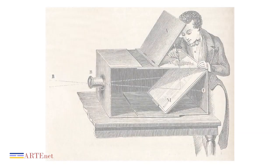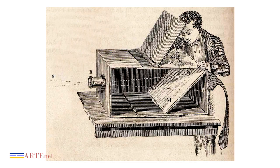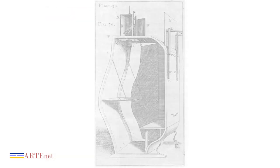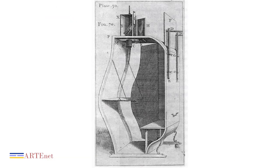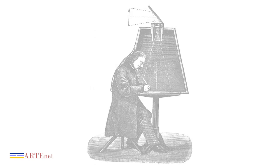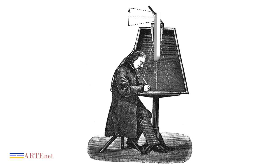To make the painter's job easier, the image was then projected onto a horizontal plane thanks to a 45-degree inclined mirror. In the dark rooms with an internal observer, the painter from within the machine could retrace the subject that was projected directly onto the sheet of paper.